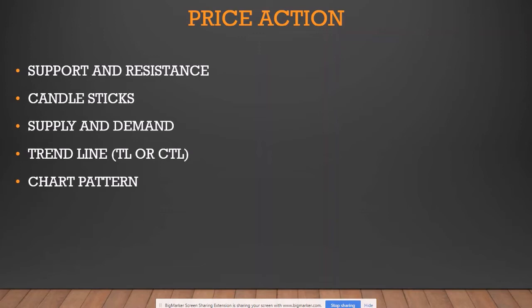If you trade support/resistance as reversals, your trigger could be a bullish engulfing candle off that support close, showing momentum came to the upside and the support is holding. For supply and demand zones, you can have limit orders set for when a zone gets hit, expecting price to immediately reject and go the opposite direction. Trend lines work the same way — you can trade trend line breaks and closes, or trend lines holding. Chart patterns like head and shoulders, flags, wedges, pennants, rectangles, double tops, and double bottoms can all be a call to action.